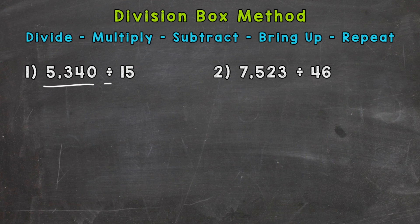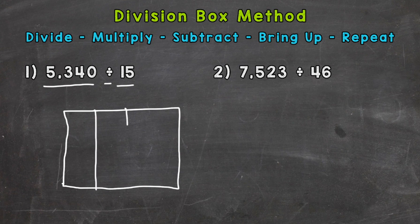So 5,340, that's our dividend. It's the number that we are splitting or dividing up, and we're dividing by our divisor of 15. So the first thing we need to do is draw out our box. Now, your drawing of these boxes and your spacing will get better the more you do of these. So once we have the box, we need to split it into four sections going vertically. So 1, 2, 3, and 4.